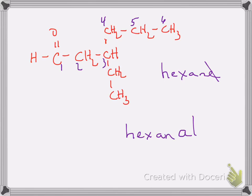Then the next thing we have to do is name the substituents. There's one substituent right there. That's an ethyl group. That's on the three carbon. So we have 3-ethylhexanal.